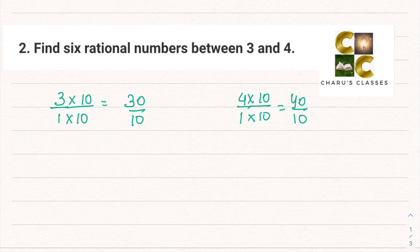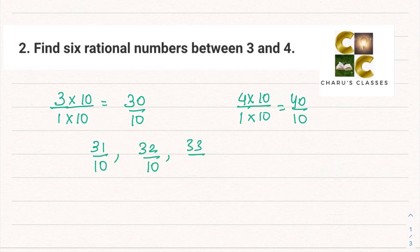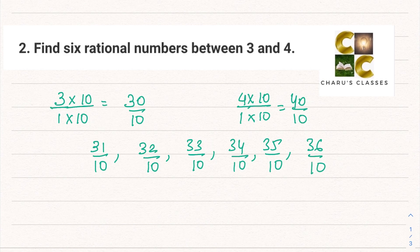Multiplying both by 10, I get 30 by 10 and 40 by 10. Now I can write any six numbers between 30 by 10 and 40 by 10: 31 by 10, 32 by 10, 33 by 10, 34 by 10, 35 by 10, and 36 by 10. These are six rational numbers between 3 and 4.